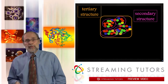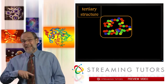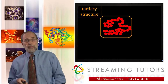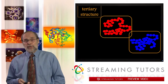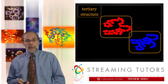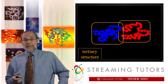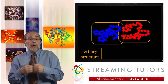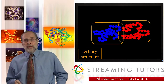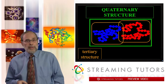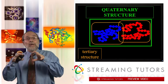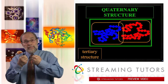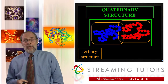Moreover, once a globular protein folds up this way, let's code the entire protein with a single color so we can tell it from another protein. Let's make this one red. It has a particular tertiary structure. Suppose you have a second protein, coded here in blue, that has its own tertiary structure, and they then form a specific non-covalent bond with one another. They associate with one another. That's what's called quaternary structure.